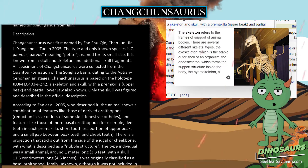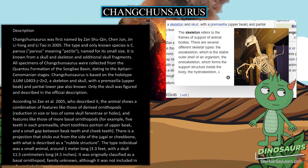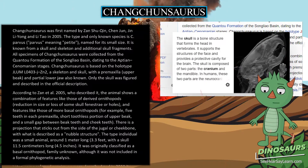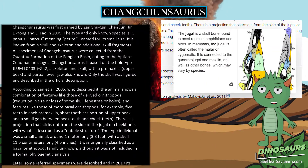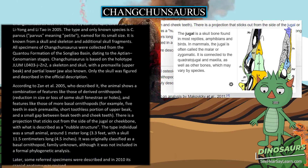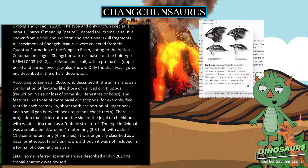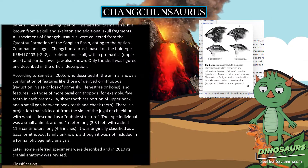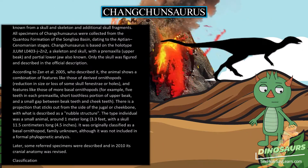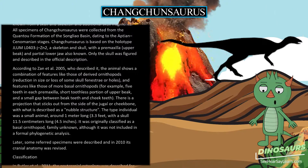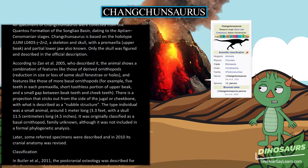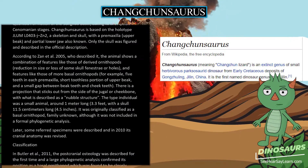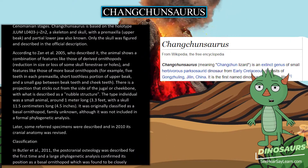Only the skull was figured and described in the official description. According to Zan et al. 2005, the animal shows a combination of features like those of derived ornithopods — reduction in size or loss of some skull fenestrae or holes — and features like those of more basal ornithopods, for example five teeth in each pre-maxilla, a short toothless portion of the upper beak, and a small gap between beak teeth and cheek teeth. There is a projection that sticks out from the side of the jugal or cheekbone, with what is described as a nubble structure.